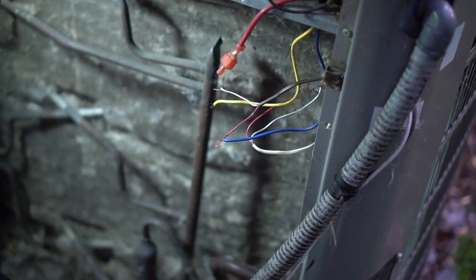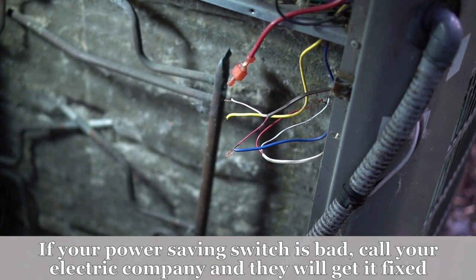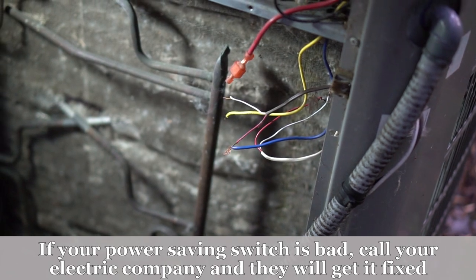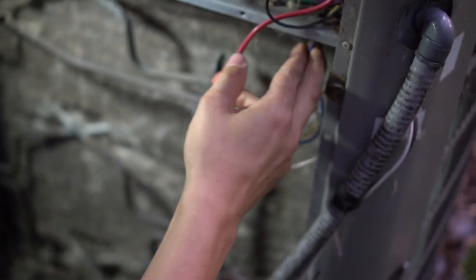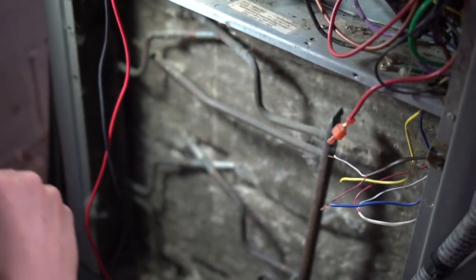Now, if the unit turns on and it works just fine, then you know that your power saver switch is bad. If your unit is still not turning on, then there's something else going on. Maybe you have some other safety switches wired in series with your contactor coil, or the furnace control board is simply not sending power out.